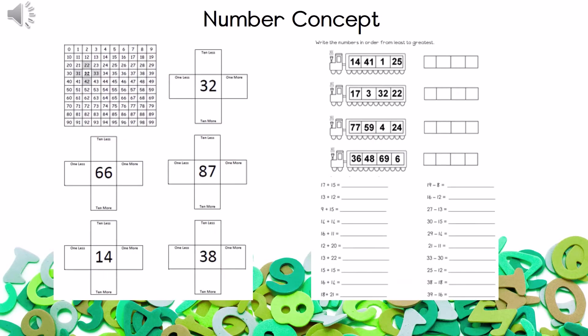Let's sharpen up your number concept. Working with a hundred chart, we're going to look at ten more, ten less, one less and one more. Let's look at number thirty-two. On the hundred chart, ten less is the number on top of thirty-two, which is twenty-two. One less is the number on the left, which is thirty-one. One more is the number on the right, which is thirty-three. Ten more is the number underneath thirty-two, which is forty-two. Now go highlight the numbers I gave you on the chart and look at the numbers around them to find the answers.